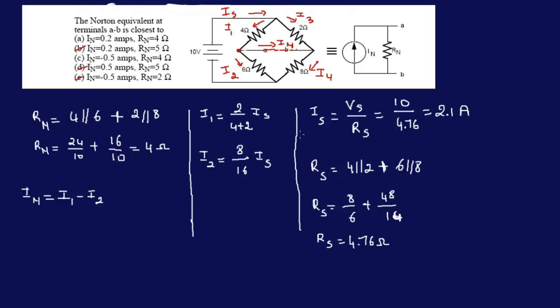I can come back here and get my I1 and my I2. My I1 is 2 over 6 times 2.1, which is 0.7 amps.